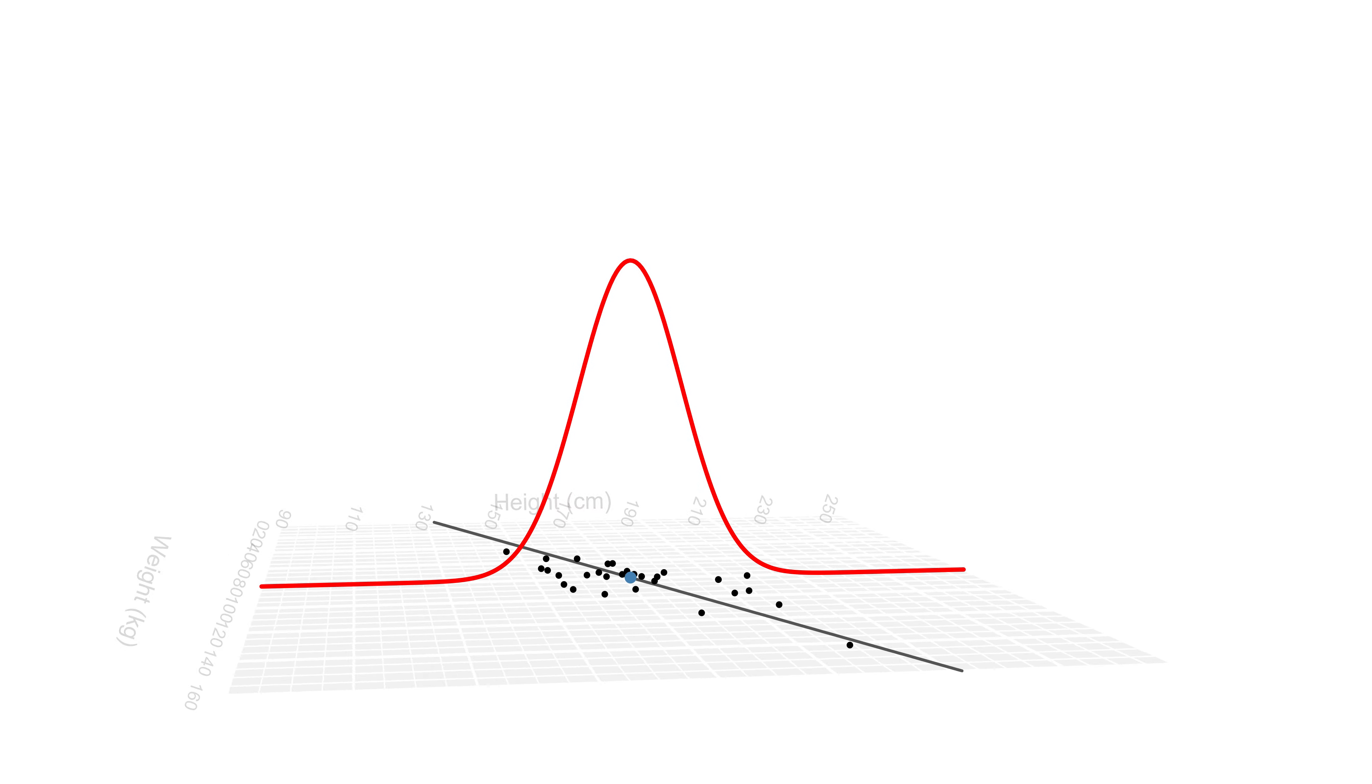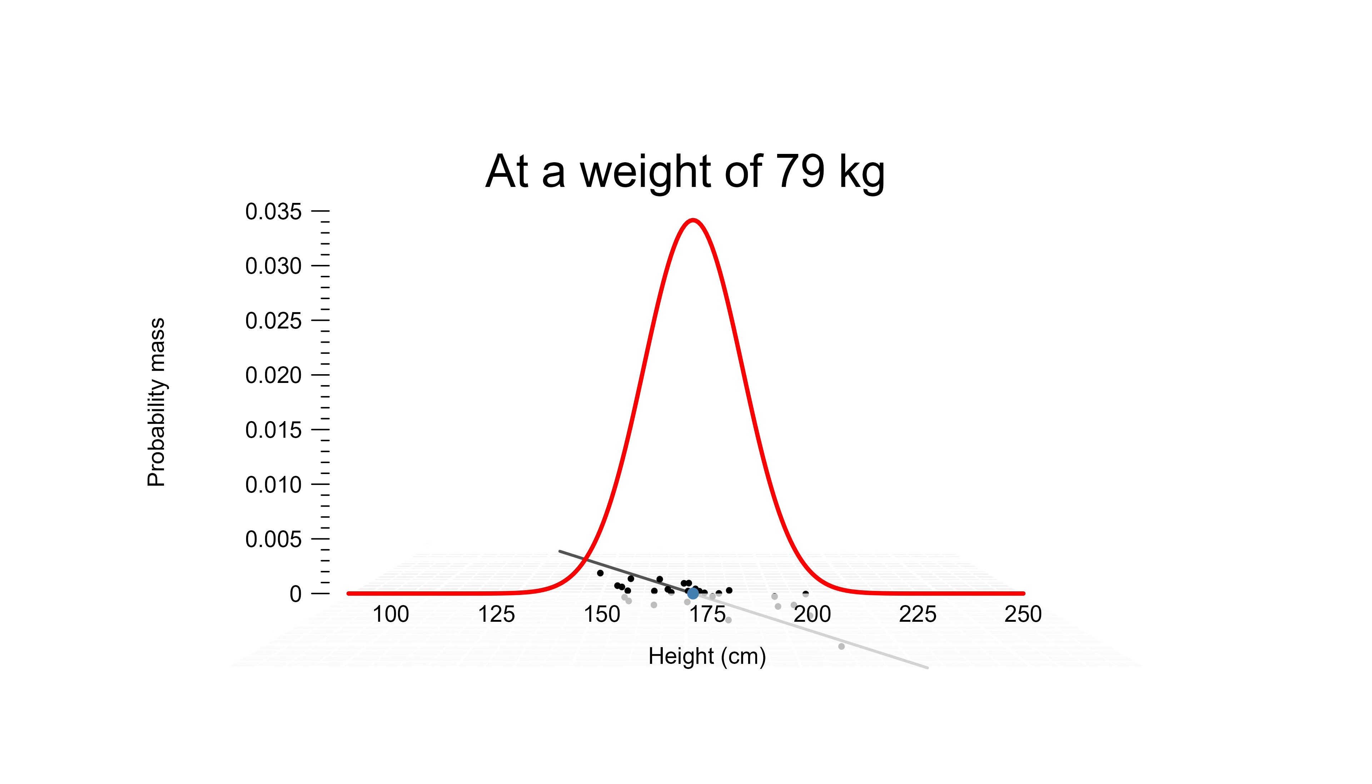At any given point on the line, we predict a normal distribution. But the mean of that distribution depends on the value of the explanatory variable.